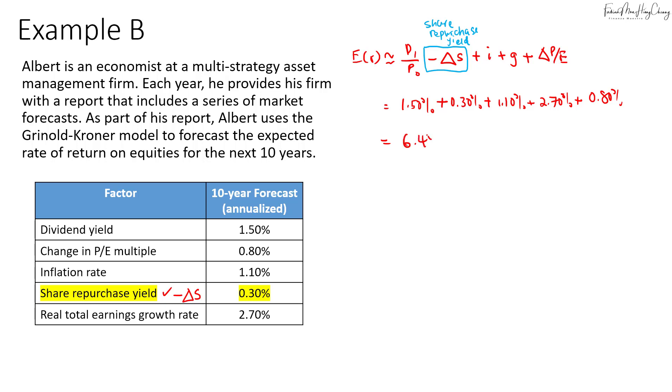That's 6.4%. So just be careful with the share repurchase yield. If they give that to you, make sure you remember that this amount equals negative Delta S, and Delta S itself is the change in the number of shares outstanding.